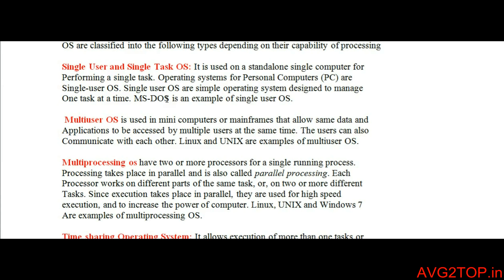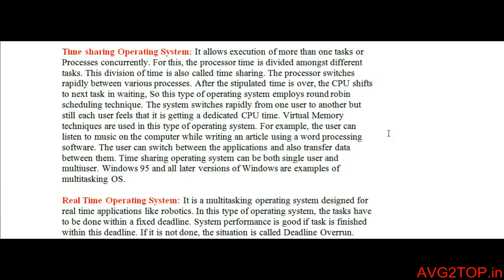Multi-processing operating system: here a single running process is shared by two or more processors — a form of parallel processing. The same task is performed by splitting it across processors, meaning two or more processors work at the same time on one single task, saving time and completing the process as fast as possible. Linux, Unix, and Windows 7 are examples of multi-processing operating systems.